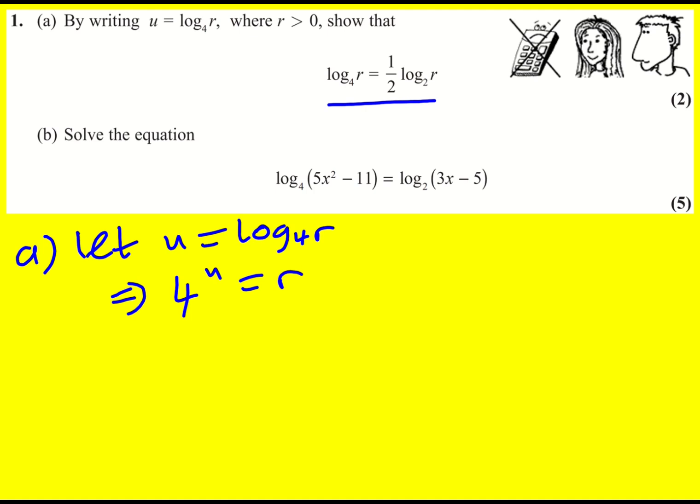And now basically I want to try and get it in terms of base 2. So one way of doing this is to write 4 as 2 squared. So it's going to be 2 squared to the power u and I can actually just then write it as 2 to the 2u is equal to r.